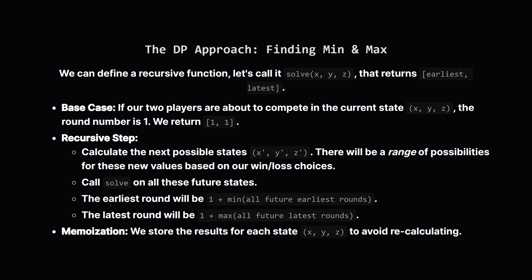We'll create a function that takes our state — the counts X, Y, and Z — and returns both the earliest and latest rounds from that point forward. The base case is simple: if our two players are matched up against each other in the current state, we've found a meeting that takes one round, so we return one for both earliest and latest. For the recursive part, we calculate all the possible next states, then call our function on each of those future states. To find the overall earliest round, we take the minimum result from all those future calls and add one for the current round. For the latest, we take the maximum and add one. Since we'll be seeing the same states over and over, we'll use memoization to cache the results — this is what makes the solution fast.